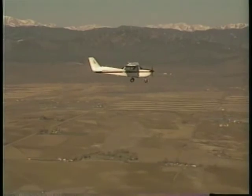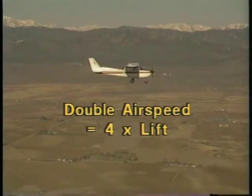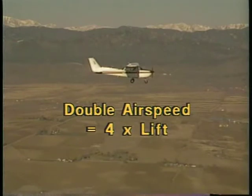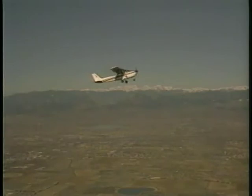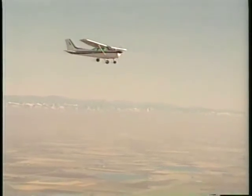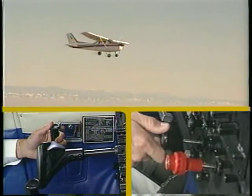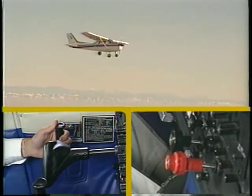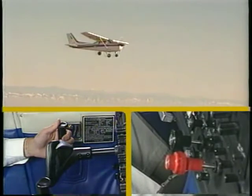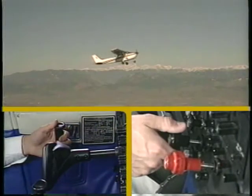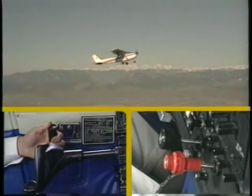If all other factors remain constant, doubling an airplane's airspeed develops four times more lift. This increase, however, is not without its drawbacks, since any increase in lift also results in an increase in drag. In addition, with all other factors remaining constant, an increase in angle of attack increases lift. For lift to remain constant, airspeed and angle of attack must be used in conjunction with each other. If airspeed increases, you must decrease angle of attack. Conversely, if you want to maintain the same amount of lift at a slower airspeed, you must increase the angle of attack.